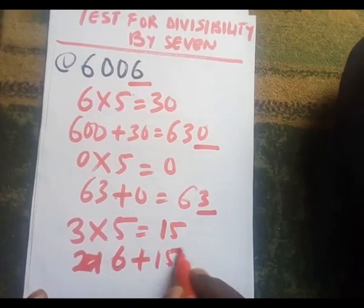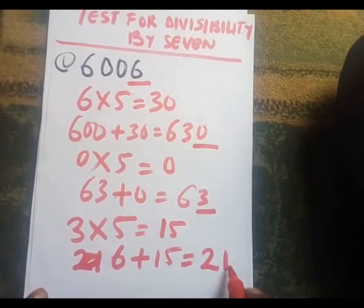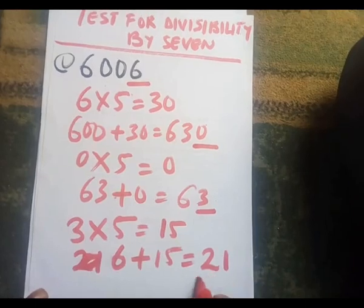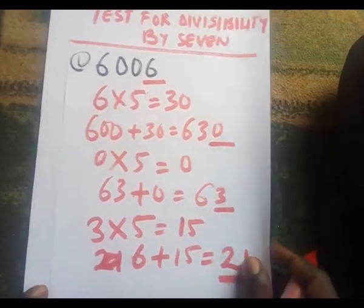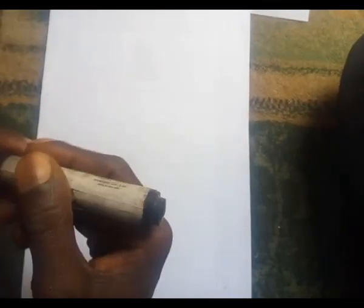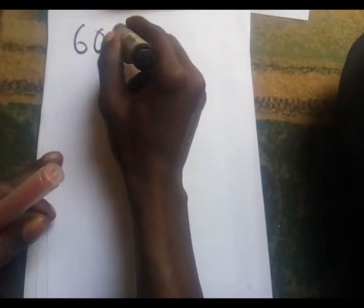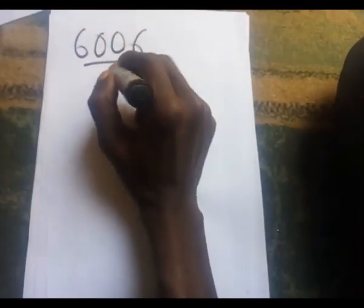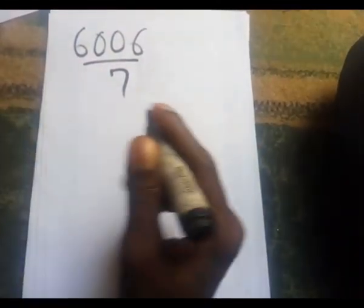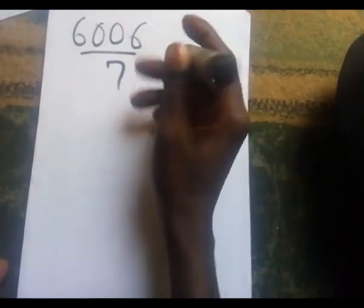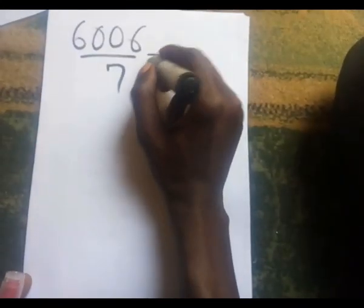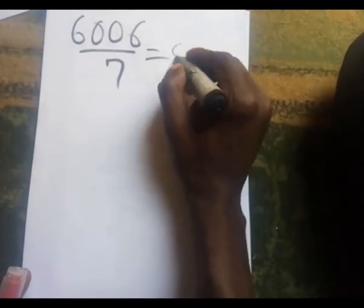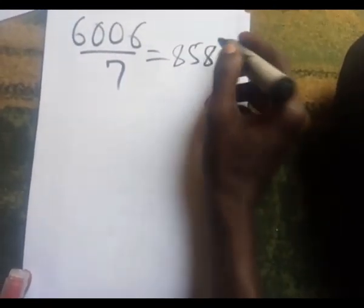Six plus fifteen gives twenty-one. We know that twenty-one is divisible by seven. Since twenty-one is divisible by seven, this means 6,006 is also divisible by seven. The result of the division is 858.